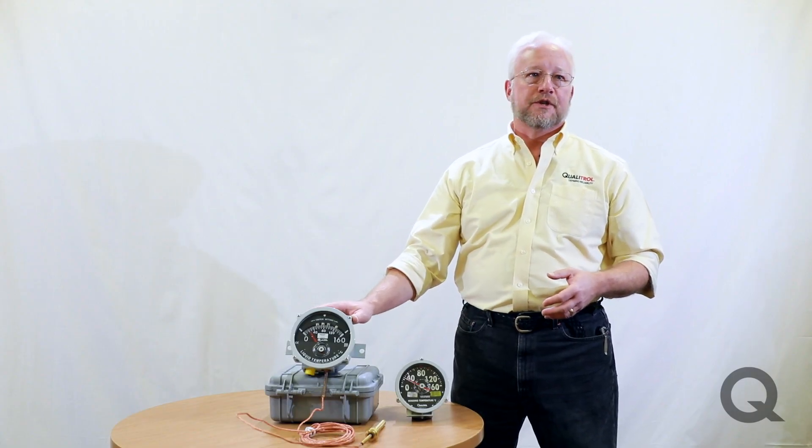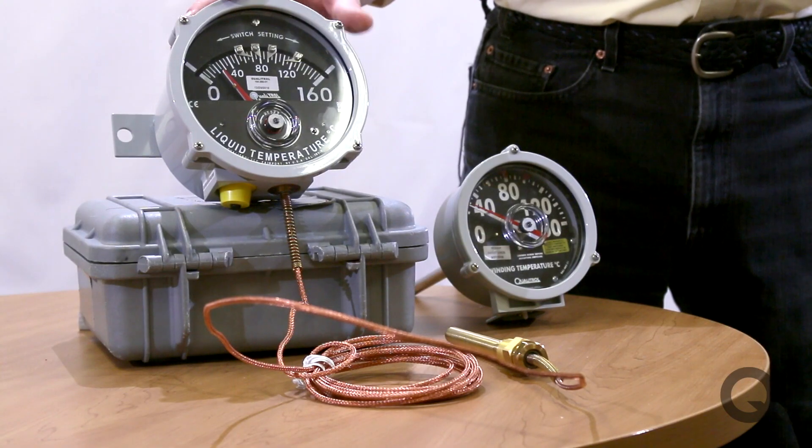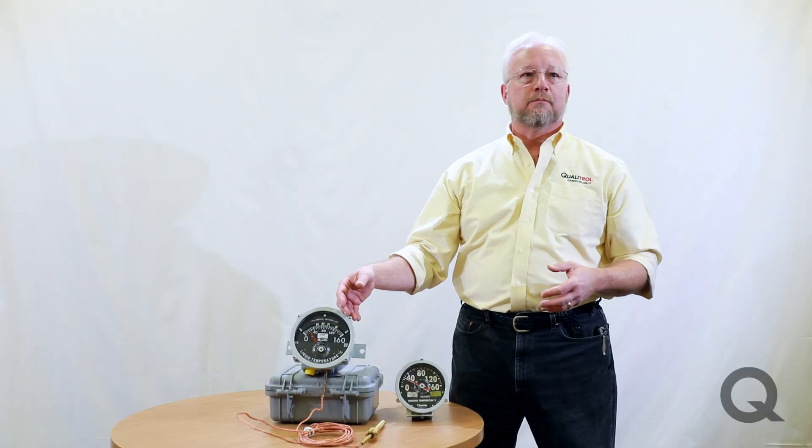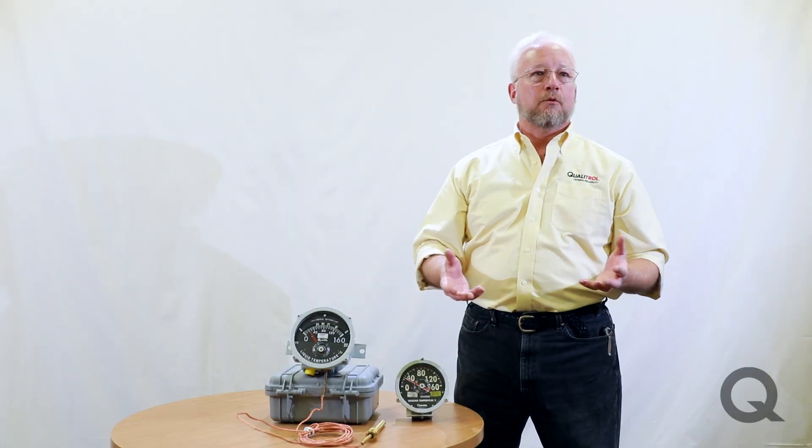With a remote mount, we also have universal types that can give you up to three or four switches. They could be winding temperature or liquid temperature, and that way you don't even have to worry about what kind of thermometer you've got there. You could even use a remote universal to substitute for a direct if you chose to do that.